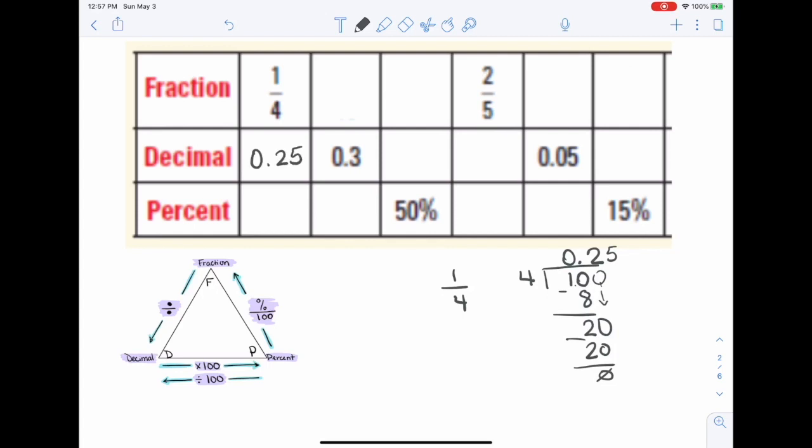Ahora, de decimal a porcentaje, decimal a porcentaje, acuérdate, vamos a multiplicar por 100 o mover el punto dos espacios. So one, two, and that's going to give me 25%. Let's try the next one.